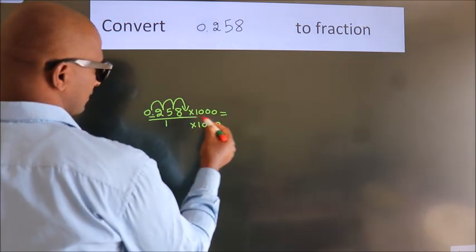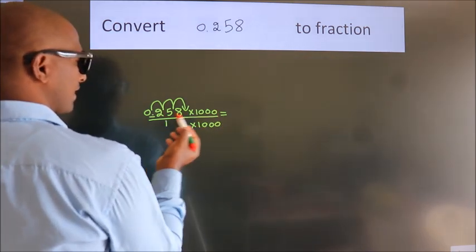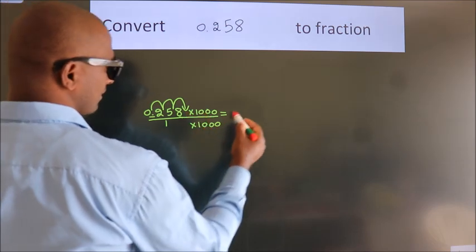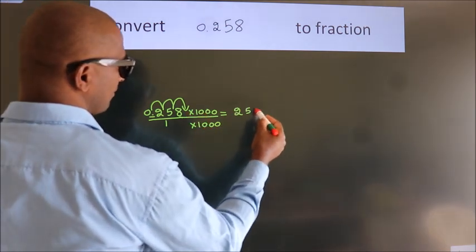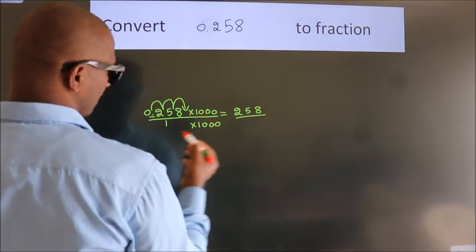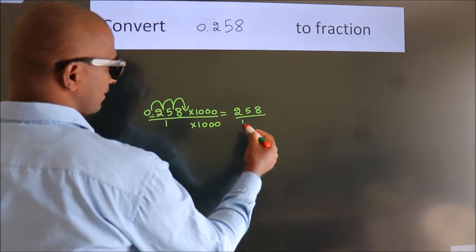Next. 0.258 into 1000 is 258. 1 into 1000 is 1000.